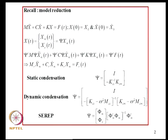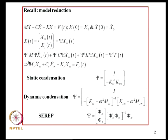The idea is that we want to reduce this model to a lower order reduced model through a transformation X = Psi * XM. That means we will partition the degree of freedom X into a set of master degrees of freedom and slave degrees of freedom, and the state vector X is related to the master degrees of freedom through the Psi matrix. Once we find that, we substitute into the governing equation and get the reduced mass, damping, and stiffness matrices governing the master degrees of freedom.